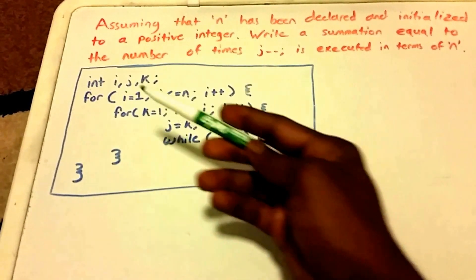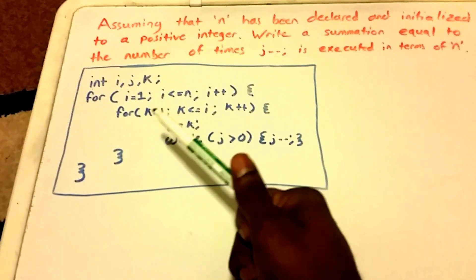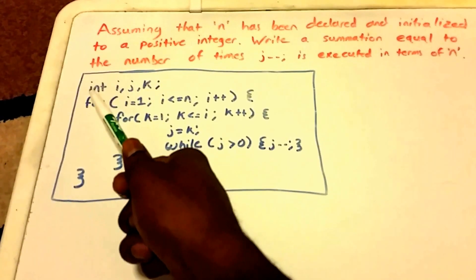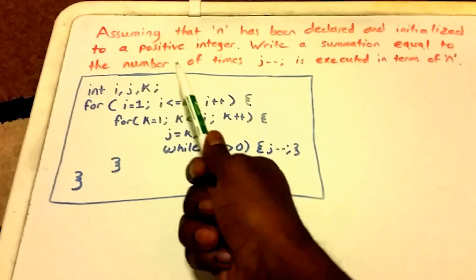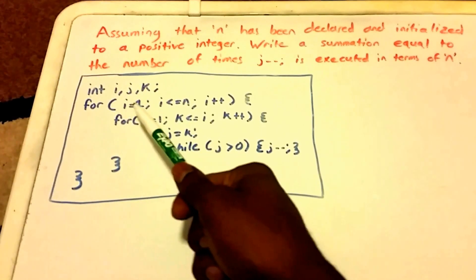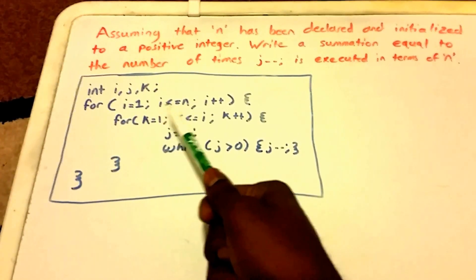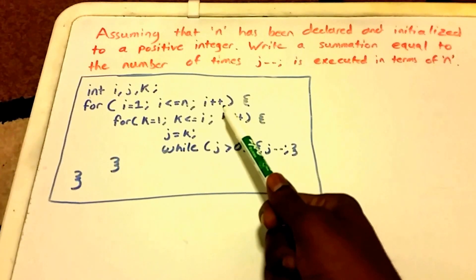Okay, so let's go ahead and get started. Here we have our code segment in blue, and it says int i, j, k; we're declaring our three variables. It says for i equals one, it's going to run while i is less than or equal to n, and then i is going to increment by one.